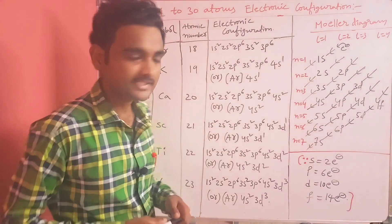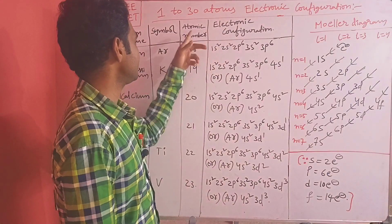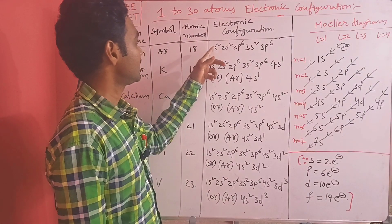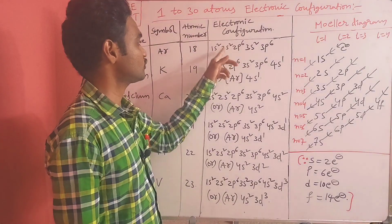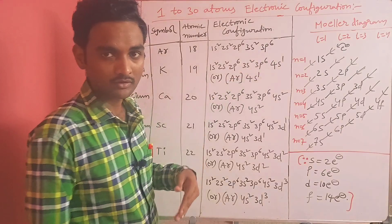Argon (Ar), atomic number 18: electronic configuration 1s2 2s2 2p6 3s2 3p6. Here the 3p orbital is completely filled. If the next electron is present, it will go to the 4s orbital.